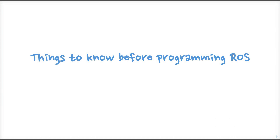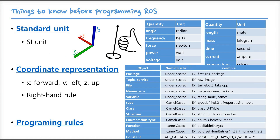Things to know before programming ROS: we learned that communication in ROS follows the ROS communication protocol, called message. If two nodes are using the same message but send or receive values in different units, problems occur. For example, when you buy a laser scanner, if your program receives data in meter units but the sensor sends data in centimeters, you'll be disappointed. Products should meet standard units, and so should you in ROS programming.